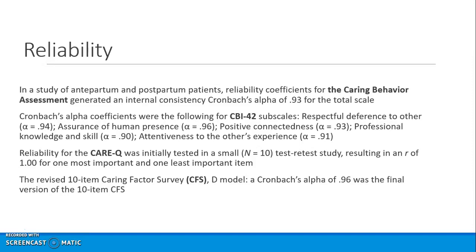For the CARE-Q, there was test-retest reliability with a one-item perfect correlation, used as a test-retest reliability check on one item alone. For the Caring Factor Survey — the Watson model type — the Cronbach's alpha was 0.96 for the final 10-item version.